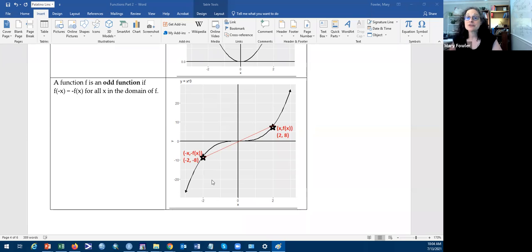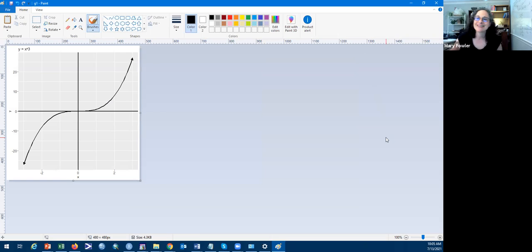All right, so looking here at y equals x cubed, there's also a transformation that we can use to check, a rotation that we can use to check if a function is odd. So I open this function up as well in paint. And I make these cool graphs in the R programming language, in case anyone wants to learn that. Always a fun thing to talk about.